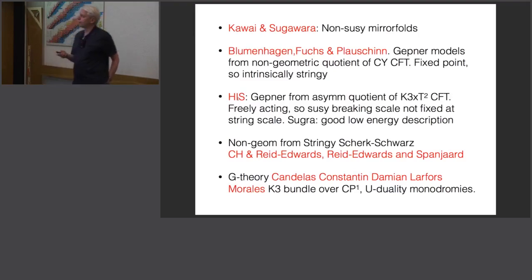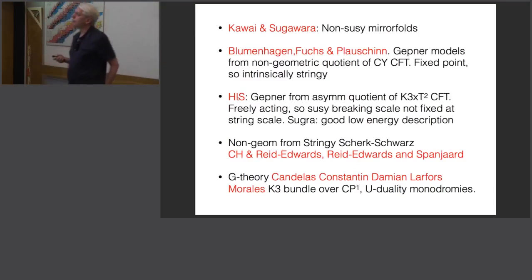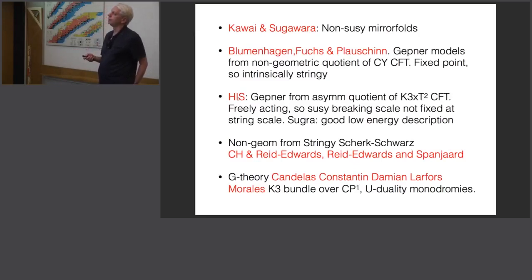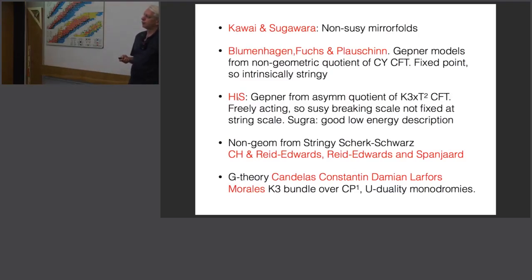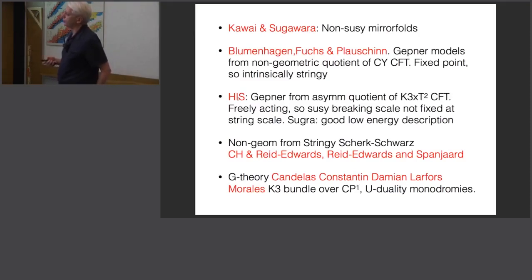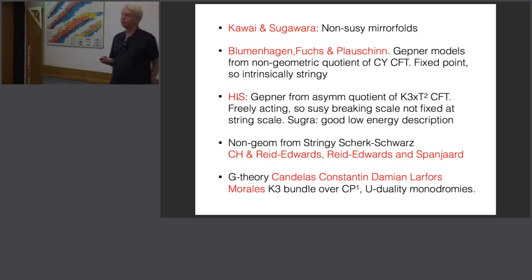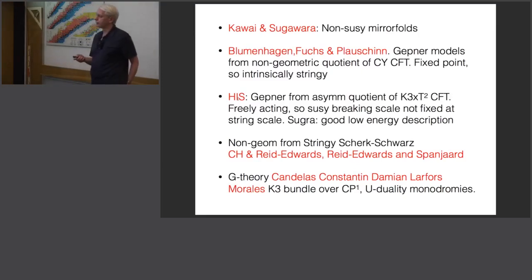The supergravity construction corresponding to that is a Scherk-Schwarz reduction. We heard a lot about these kinds of reductions this morning from Carlo, who talked about some of the different names they have, and some of the structures I'll be talking about are very similar to some of the ones he was discussing. So here we have a freely acting orbifold, and correspondingly a Scherk-Schwarz reduction in the supergravity, and then the stringy extension of that. This is also reminiscent of work by Candidas et al. which they referred to as G-theory, which had K3 bundles over CP¹ with degenerate fibres and new duality monodromies.